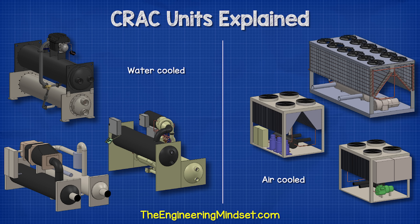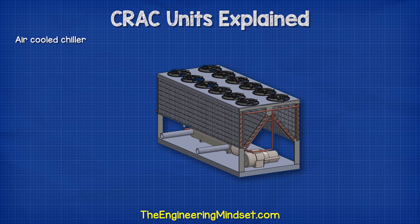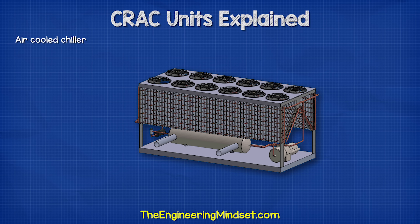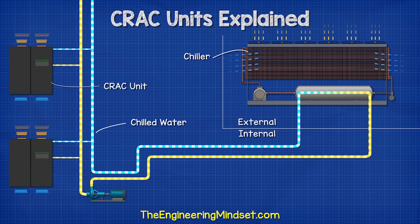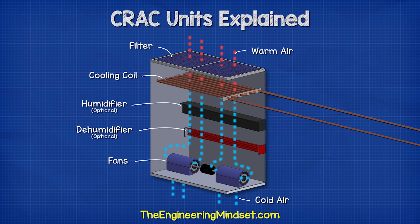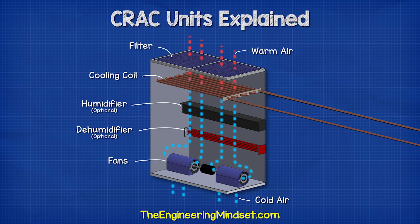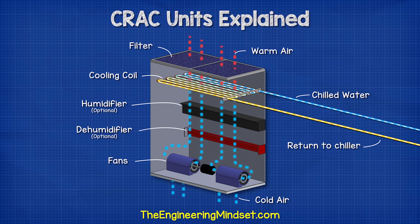Larger data centers will use chillers — either water-cooled or air-cooled. With air-cooled systems, the chiller is installed externally and provides chilled water to the CRAC unit. This chilled water flows through a heat exchanger to pick up the unwanted heat from the air. The fan moves the hot air over the heat exchanger, and once the heat is removed, the air is pushed into the void under the floor.